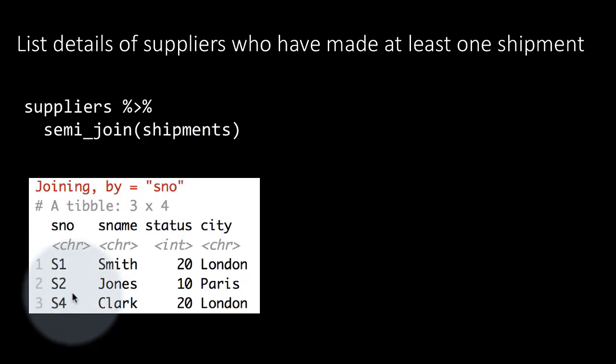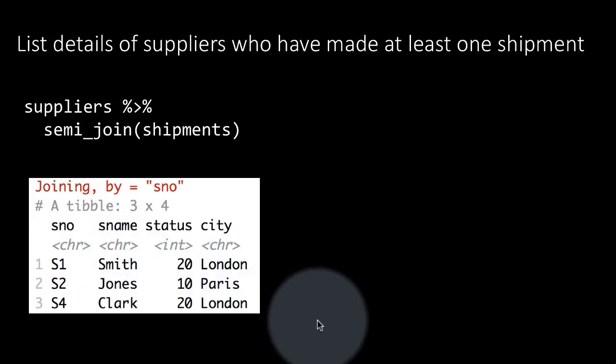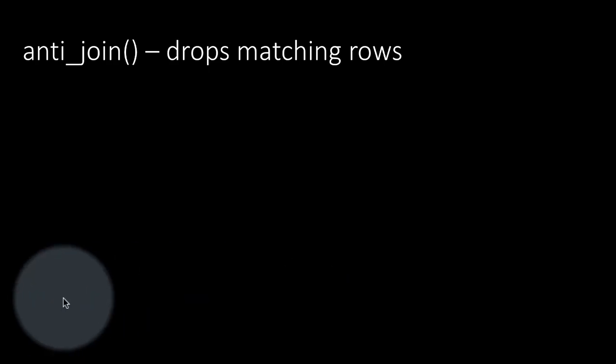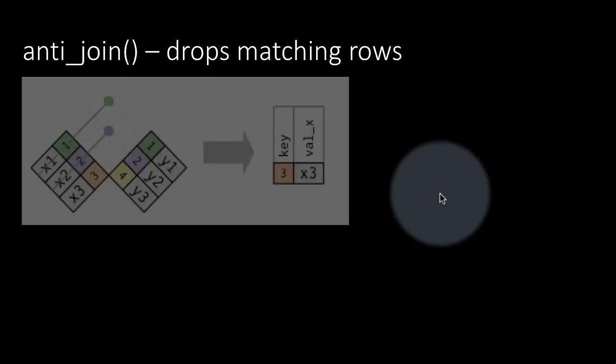Only those suppliers who occur in the shipments table are retained. S3 and S5 have not made any shipments, so they got filtered out. That is what a semi-join is — it's very useful. Anti-join performs the same filtering function but does the opposite: semi-join retains the matching rows, while anti-join simply drops the matching rows.